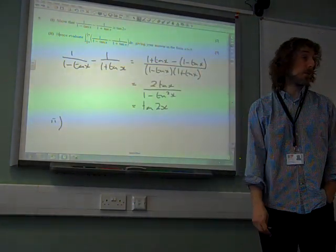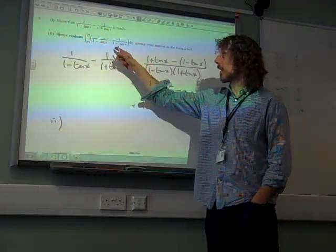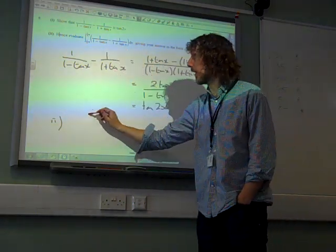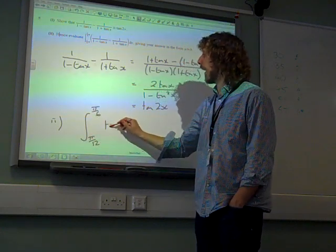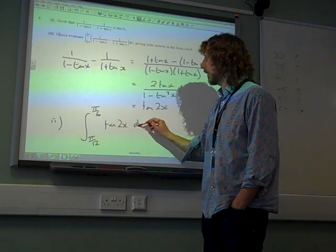Well, hence means we're going to use what we've just done. We're going to recognise that this in the bracket is tan 2x. So it's really saying pi by 12 to pi by 6, the integral of tan 2x dx.